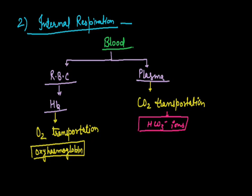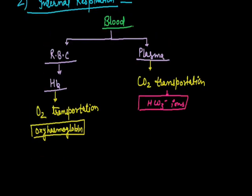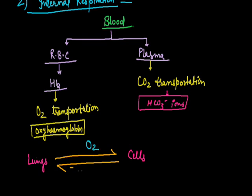Now these gases travel throughout the body via blood. Oxygen is moving from lungs to cells while CO2 is moving from cells to lungs. And this transportation is done via blood.